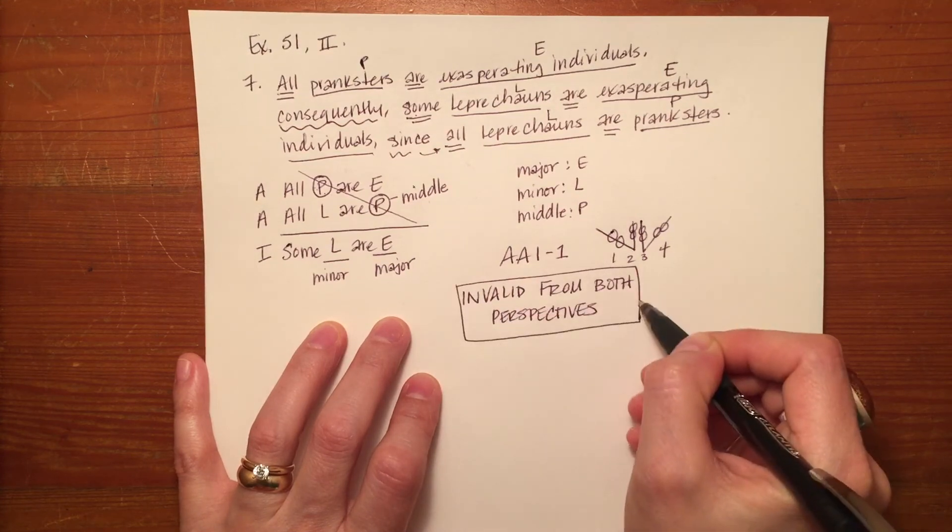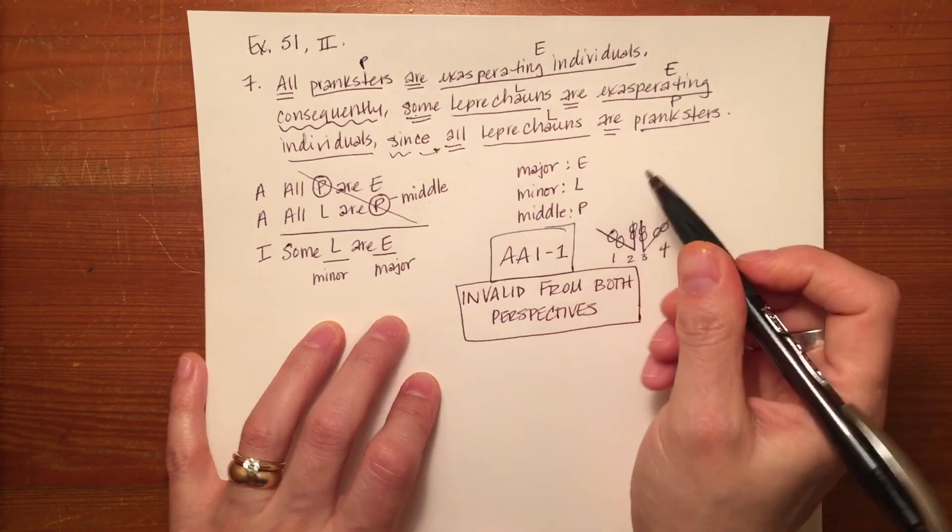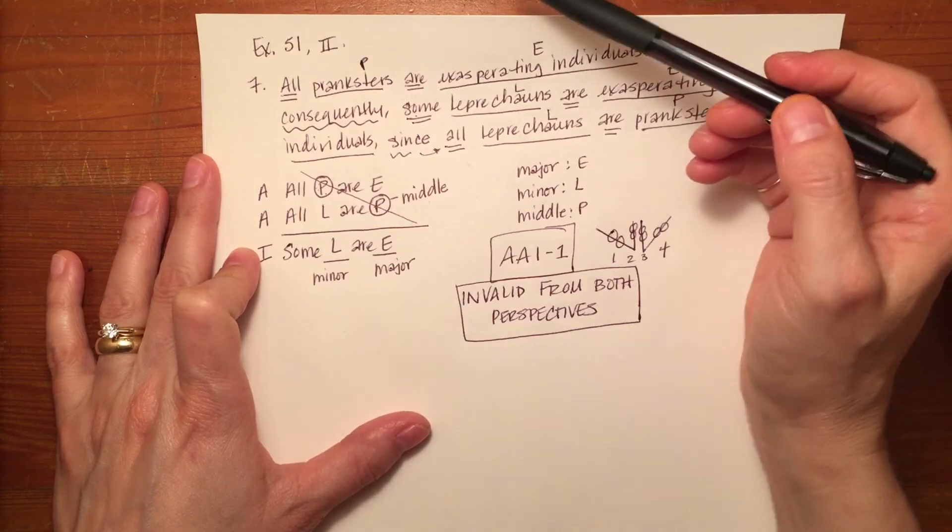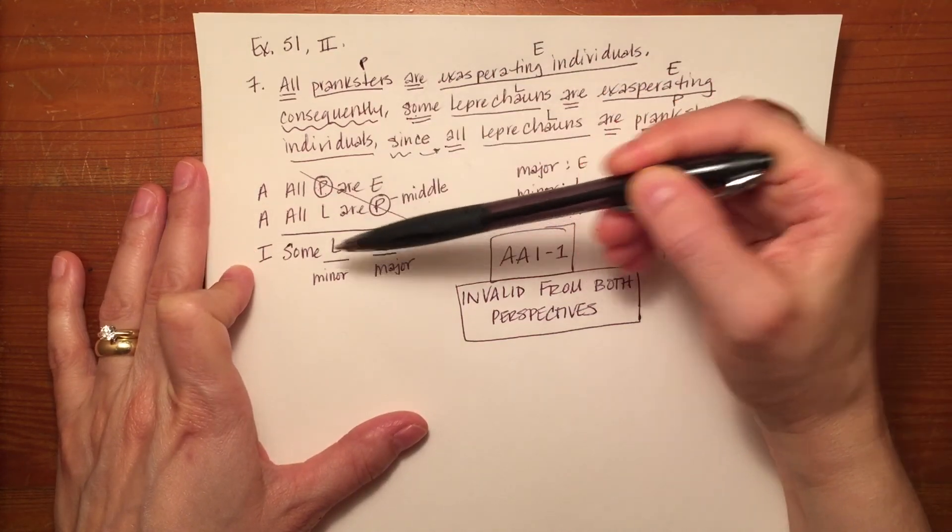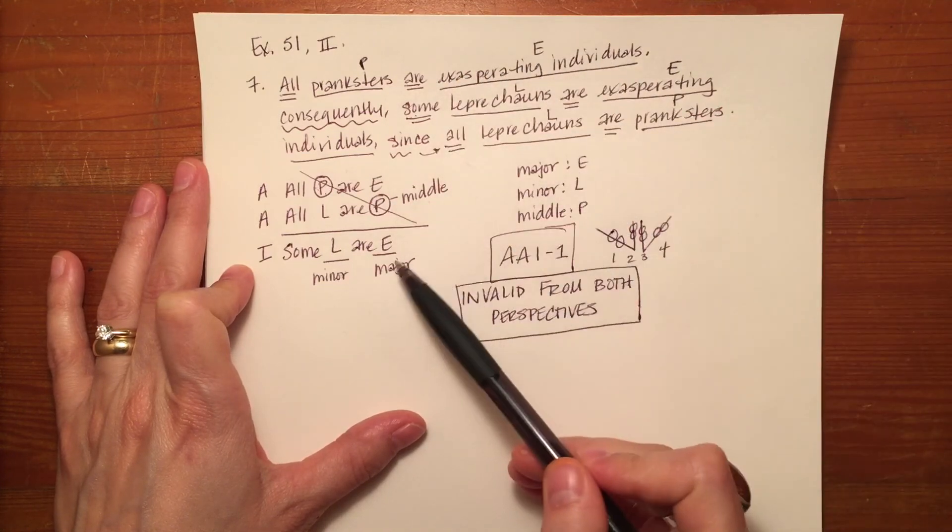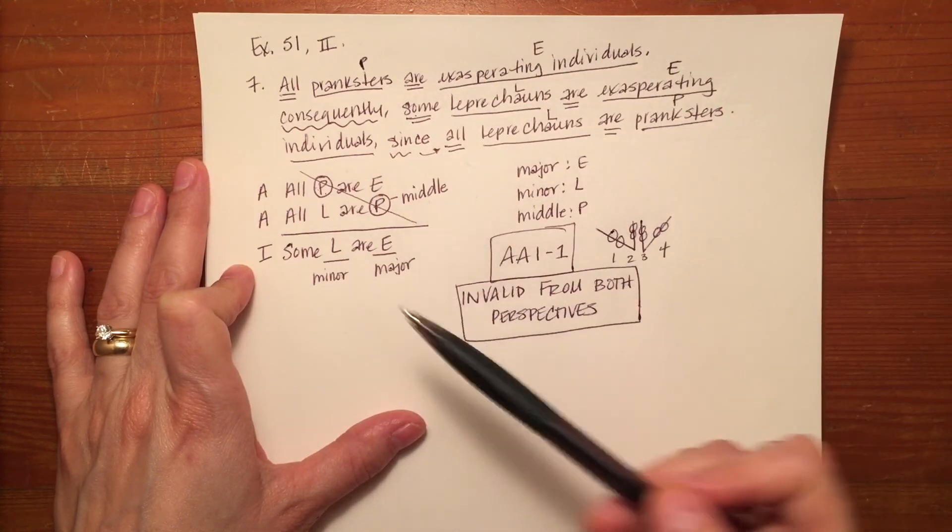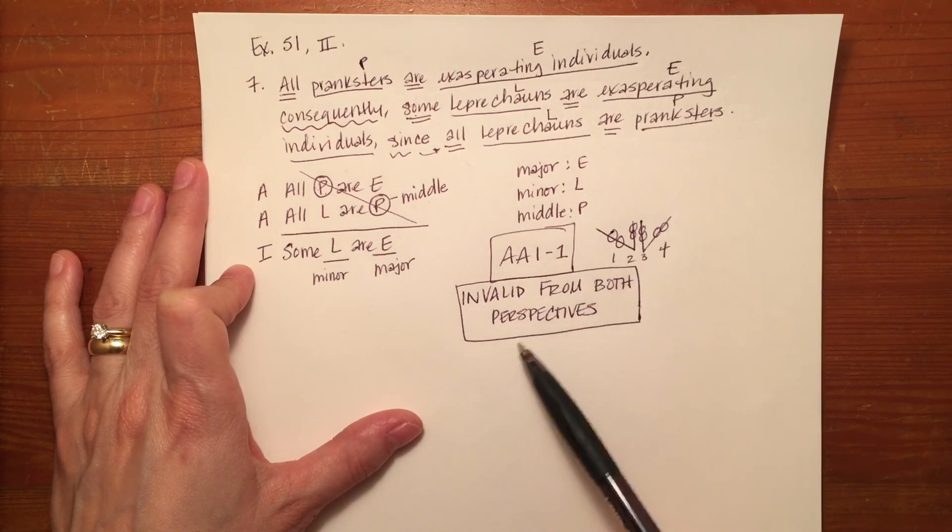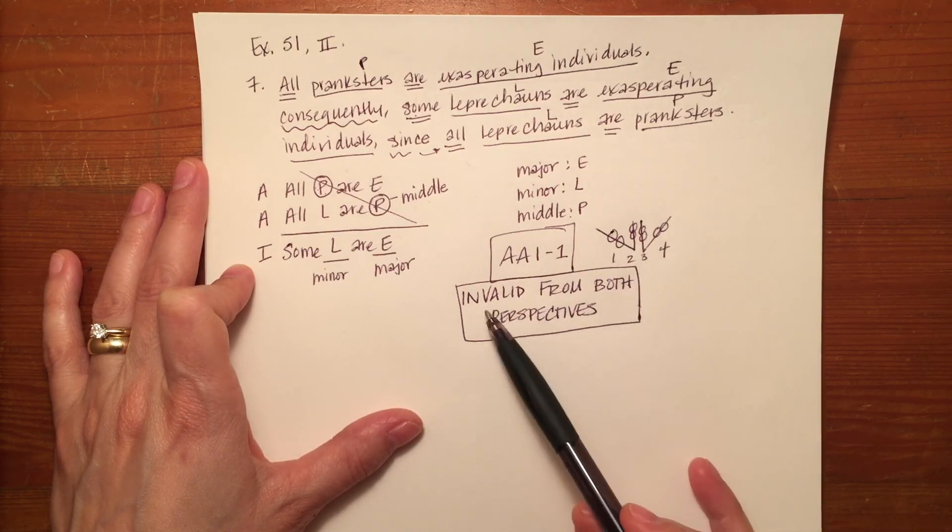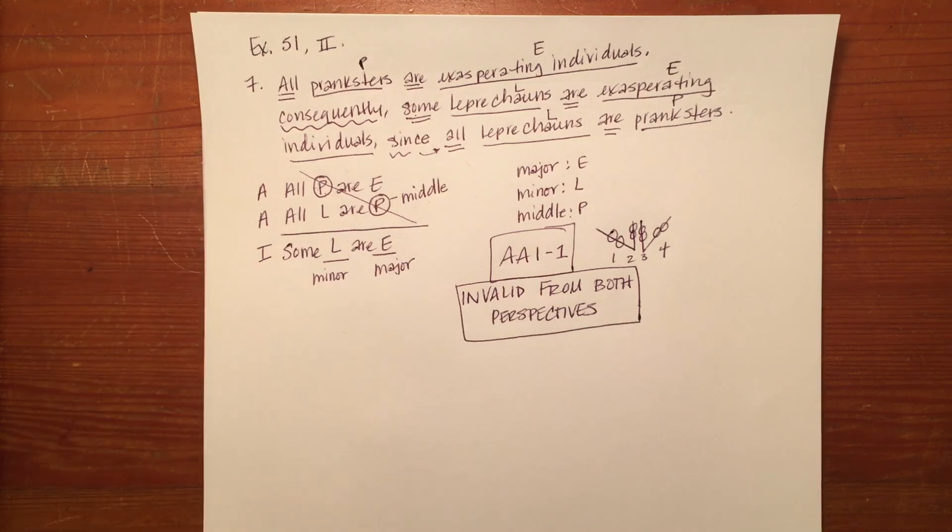So again, on a test, you'd be asked to translate this, put it into correct standard form, list or identify the major, minor, and middle terms, tell me the mood and figure, and then tell me whether it's unconditionally valid, conditionally valid, or invalid from both perspectives.